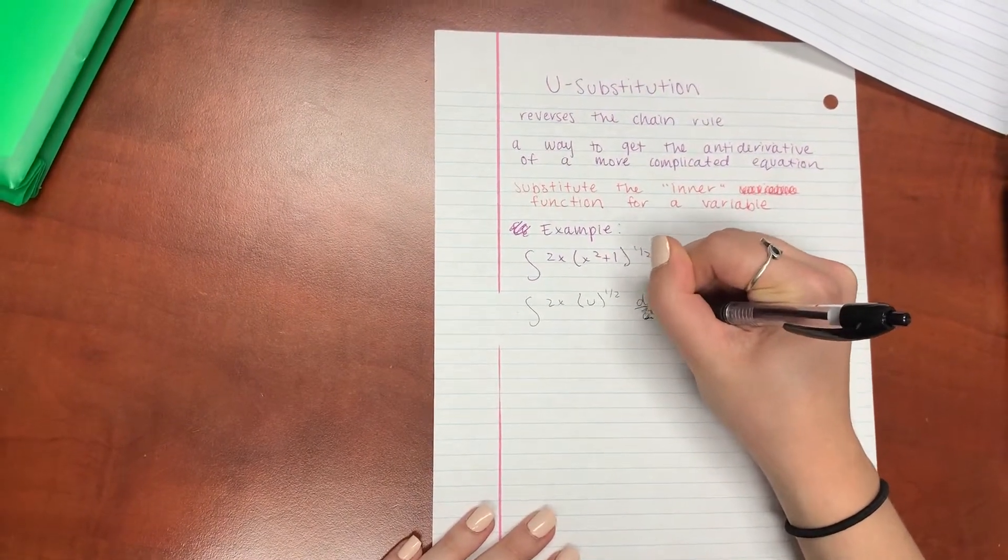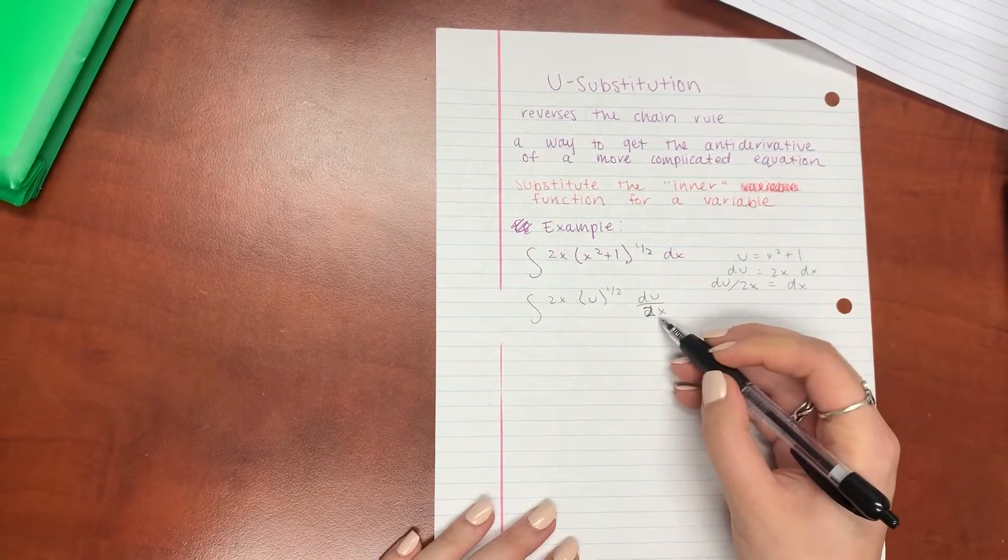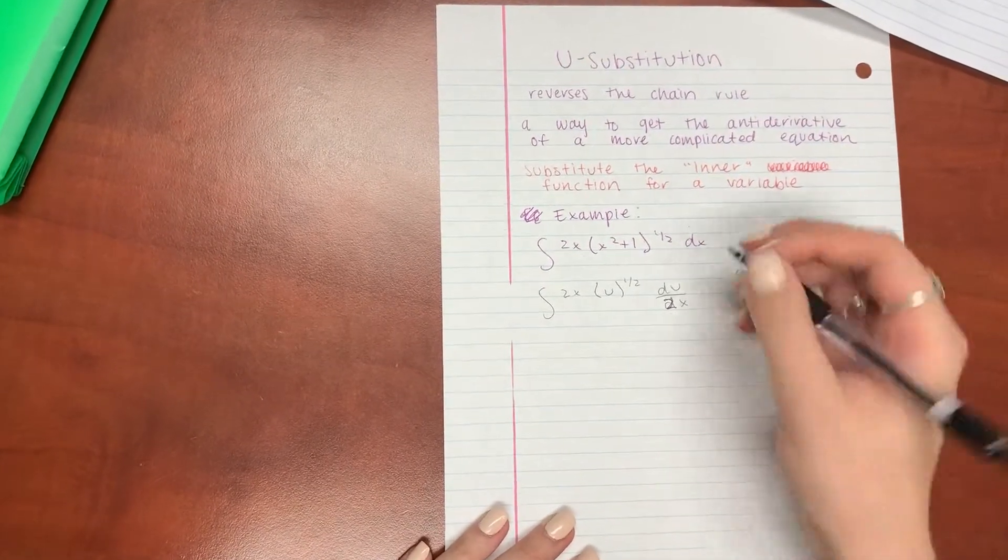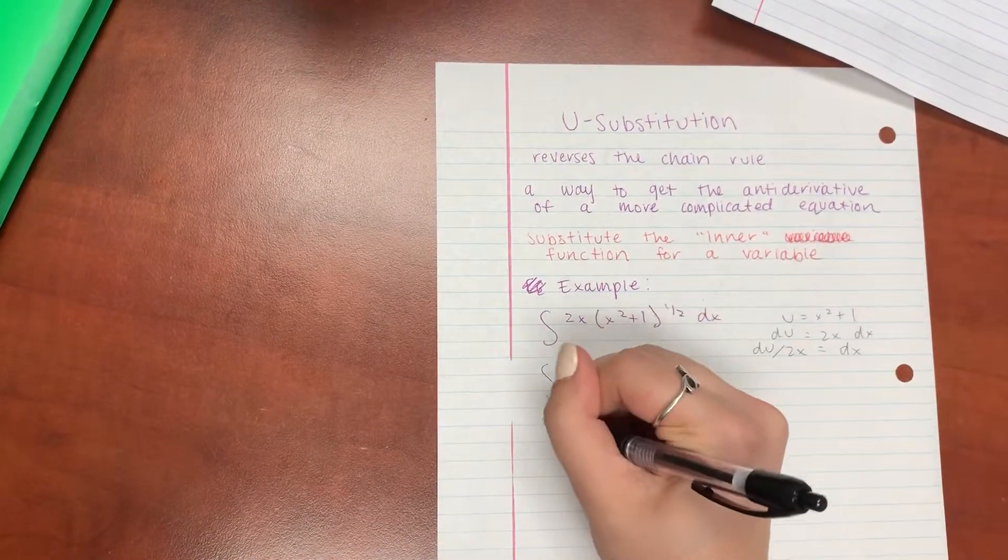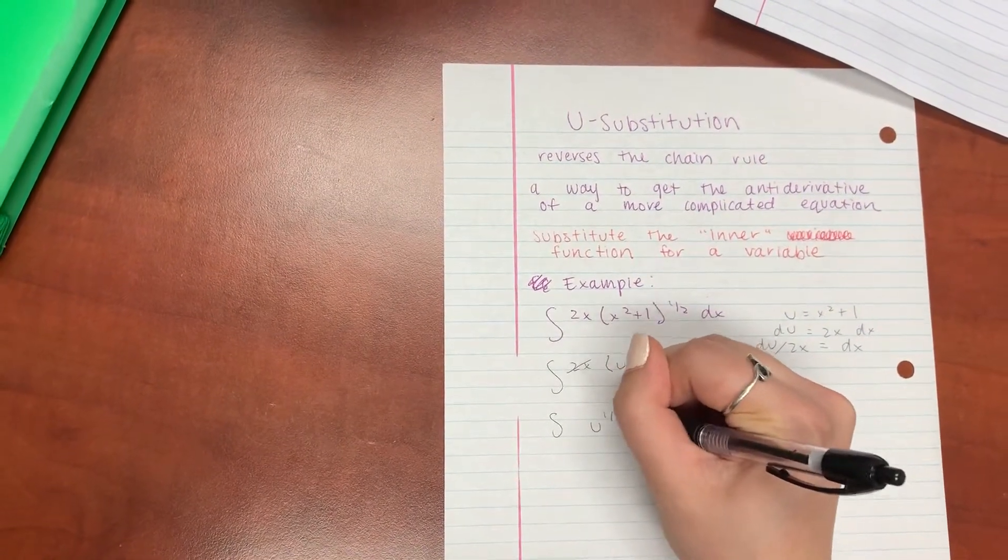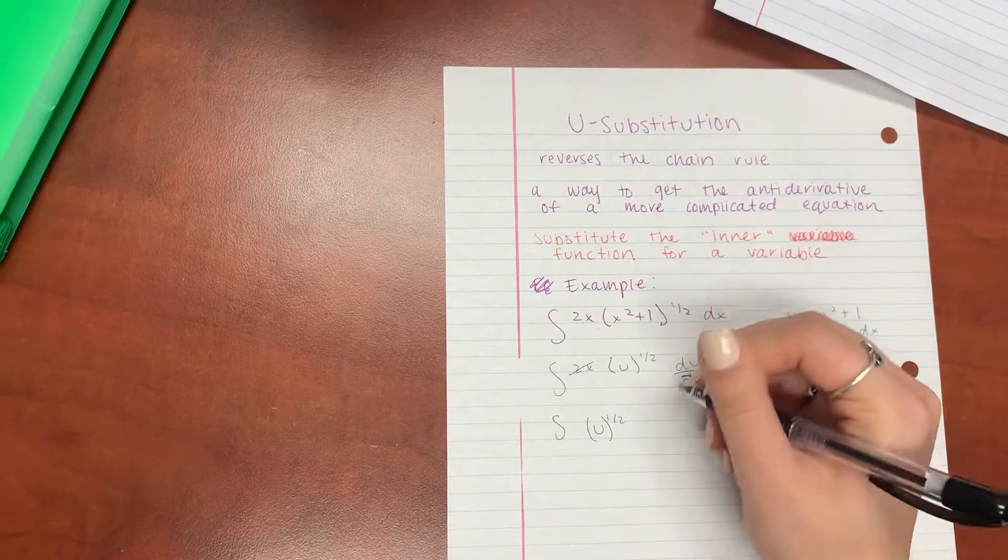Oh sorry, 2x. So as you can see, the 2x's here match up, so we can go ahead and cross those off because they do cancel each other out. And so we are just left with u raised to the 1 half, du.